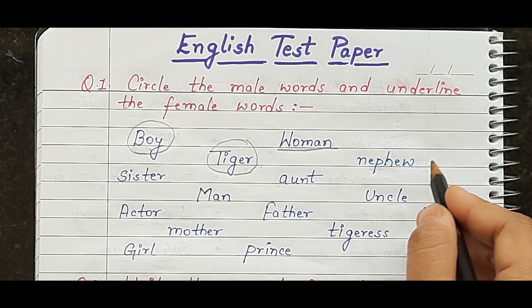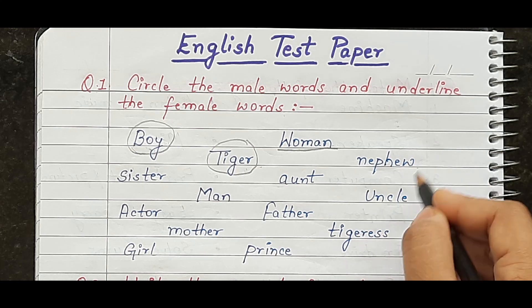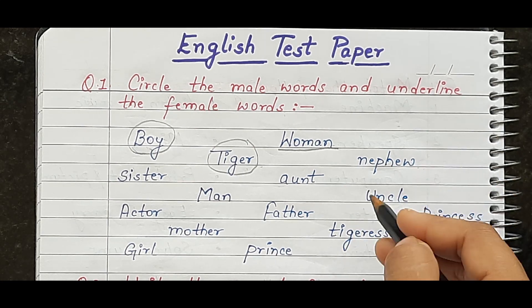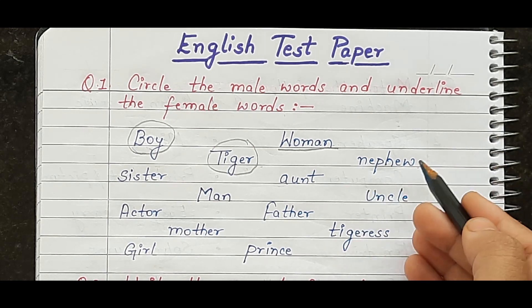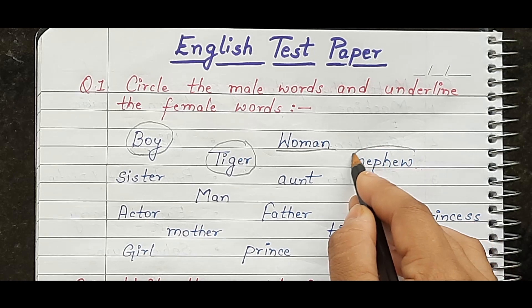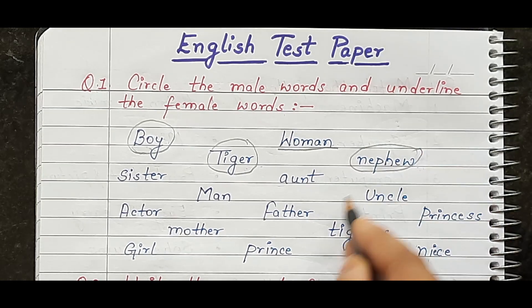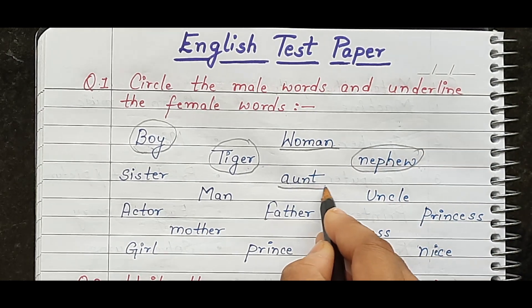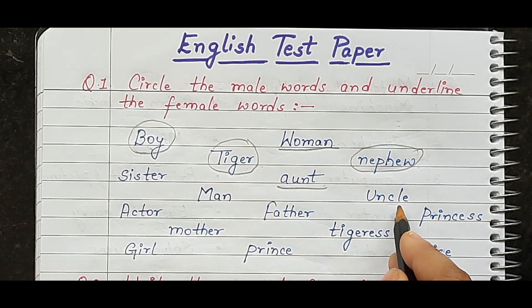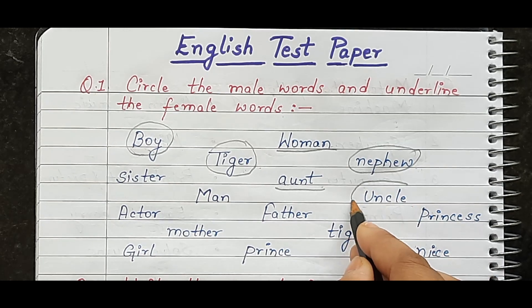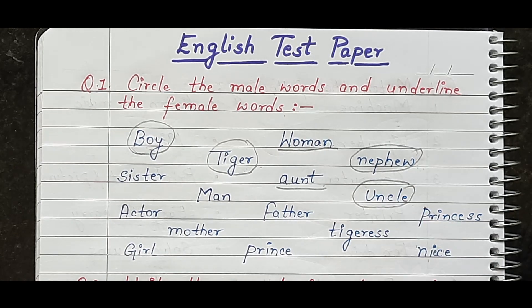'Nephew' — nephew is a male word, so this is circled. 'Aunt' — aunt is a female word, so we underline it. 'Uncle' — uncle is a male word, so it is circled.